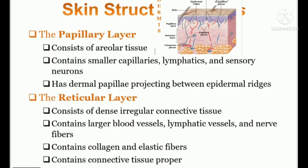The papillary layer contains areolar tissue, smaller capillaries — capillaries means minute blood vessels — lymphatic cells, and some sensory neurons. In anatomy, blue color blood vessels represent deoxygenated blood supply and red color represents oxygenated blood supply. The reticular layer consists of irregular connective tissue, larger blood vessels, lymphatic vessels, nerve fibers, collagen, and elastic fibers. These elastic fibers are used to increase the surface area of the skin while gaining weight.